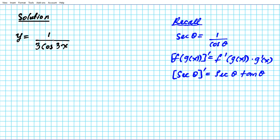So how can I rewrite this problem to avoid using the quotient rule? Well, if you notice what we have here, we can rewrite this as y equals one third of one over cosine 3x. Okay, now one over cosine 3x can be written using the reciprocal identity as secant 3x.